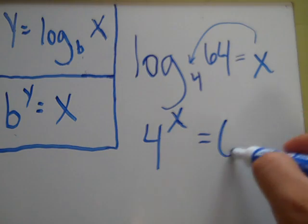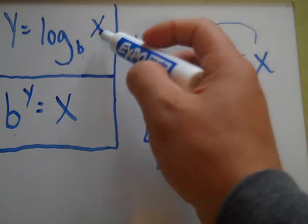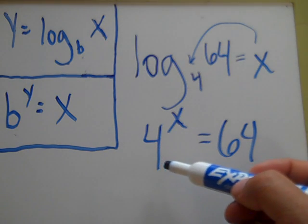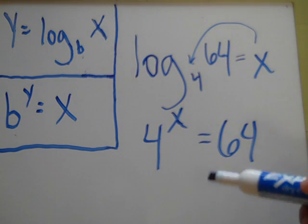Equals 64, because that's what your x is. See? 64 x. So, 4 to the x power equals 64.